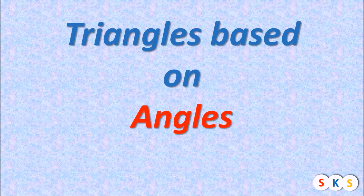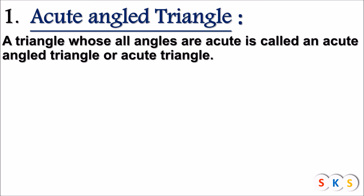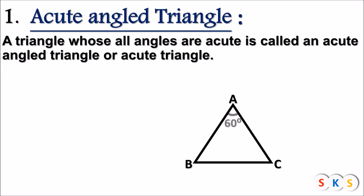Triangles based on angles. Acute Angle Triangle: a triangle whose all angles are acute is called an acute angle triangle or acute triangle. For example, angle A is 60 degrees, angle B is 50 degrees, angle C is 70 degrees. You can see that all angles have a measure less than 90 degrees, meaning all angles are acute angles. Hence, it is called an acute angle triangle.